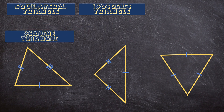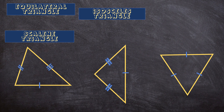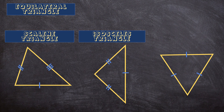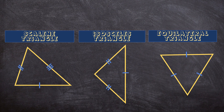And how about the second triangle in the middle? We can see that two of the sides have the same symbol — both of these sides have two stripes. So this is an isosceles triangle. And for the third triangle on the right, we can see that all three sides have the same symbol: all three sides have one stripe. So this is an equilateral triangle.